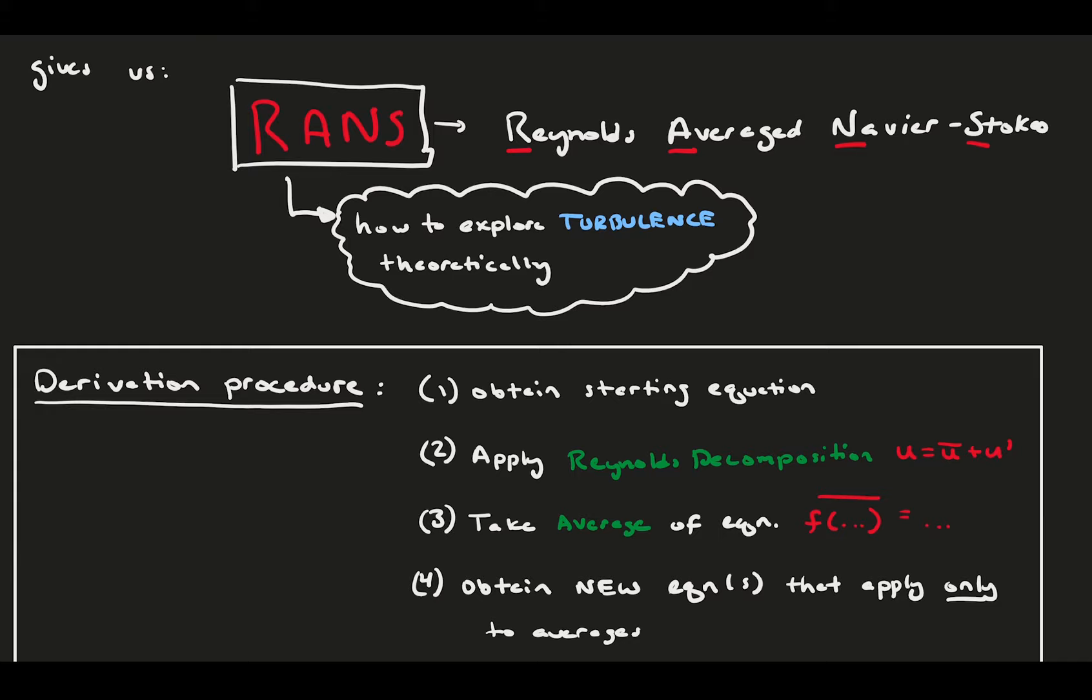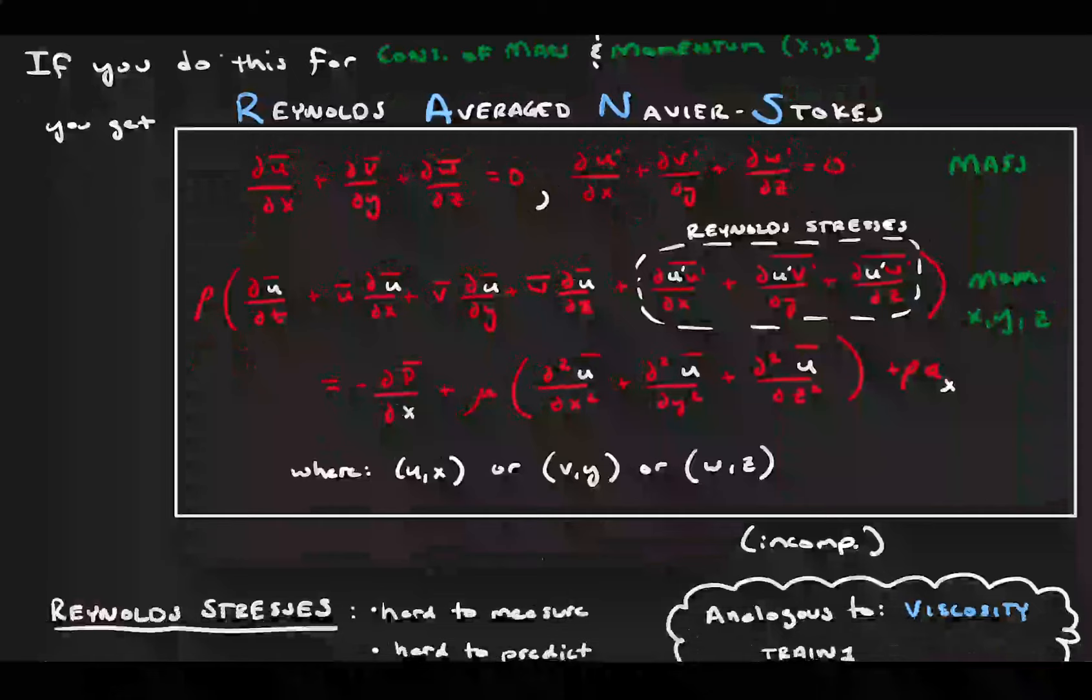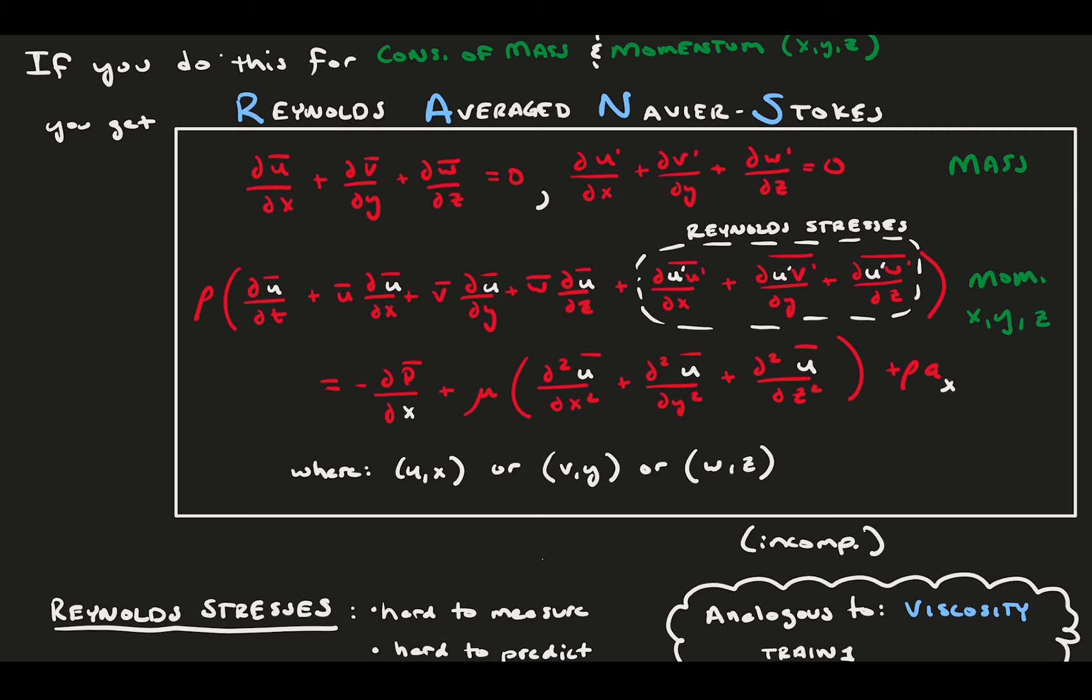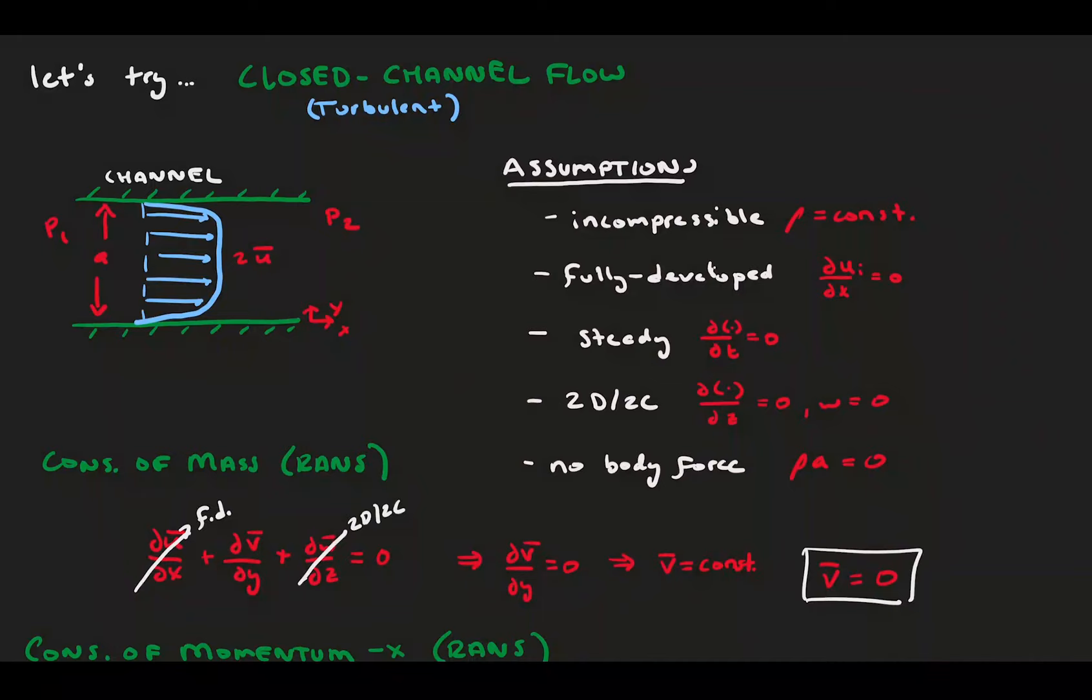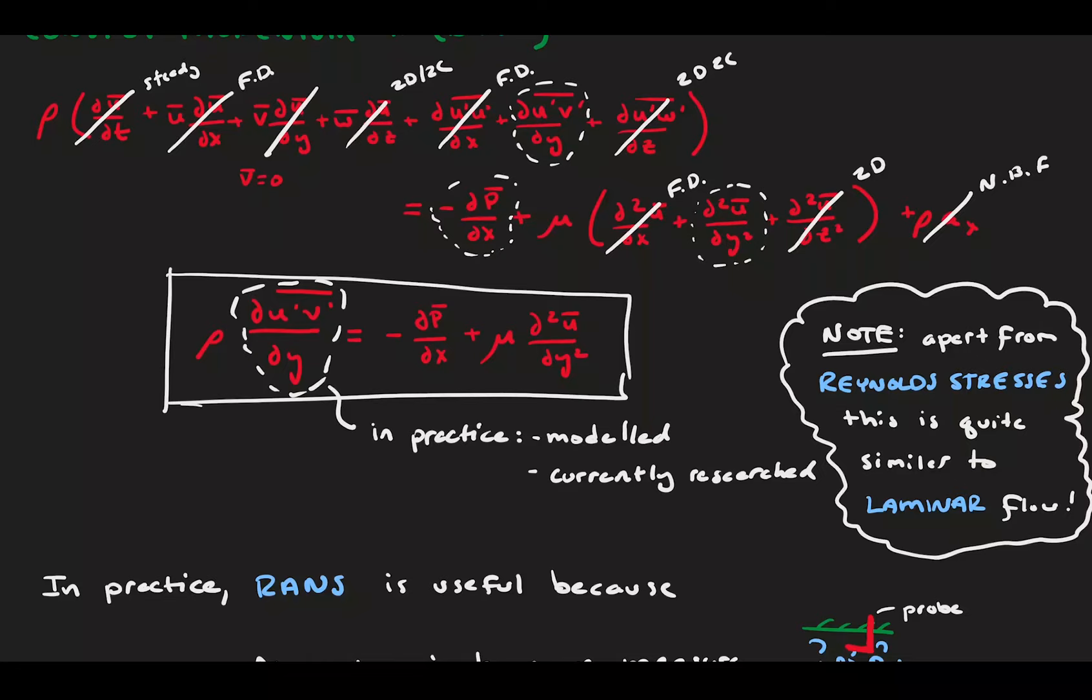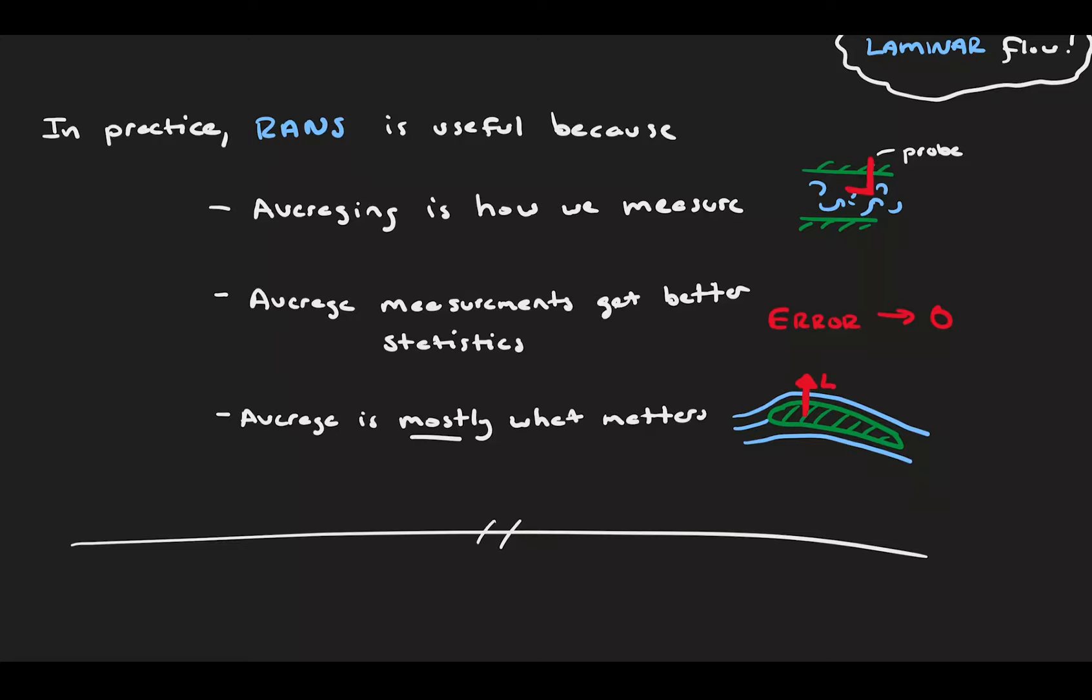Then we set out to derive the Reynolds-averaged Navier-Stokes equations, which are just the conservation equations that have been Reynolds decomposed and averaged. After a brief derivation, we were there. These equations define the behavior of an incompressible fluid entirely, but only in the average sense. We finish by showing off how useful these equations can be for something like turbulent channel flow. In the end, the equations were very similar to laminar flow, but with extra terms called Reynolds stresses, which define our limit of turbulence understanding. In practice, these equations are an incredibly useful tool when analyzing all types of turbulent flows. I hope you enjoyed the video, and thanks for watching.